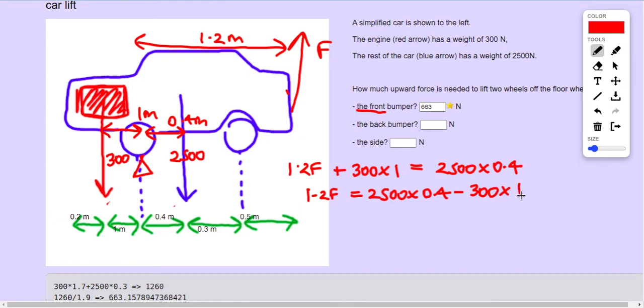Minus 300 times 1, that's 700, divided by 1.2, and that gives me 583.